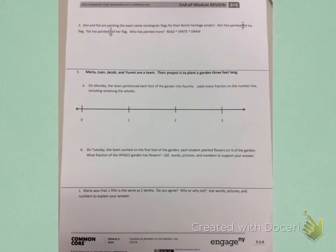Don and Pat are painting the exact same rectangular flags for their family heritage project. Don has painted two-fourths of his flag. Pat has painted two-eighths of her flag. Who painted more? Read, write, draw. So I need to draw a picture to show Don has painted two-fourths and Pat has painted two-eighths.